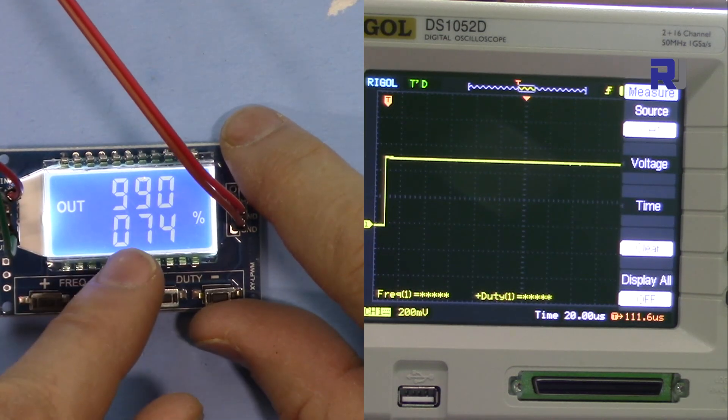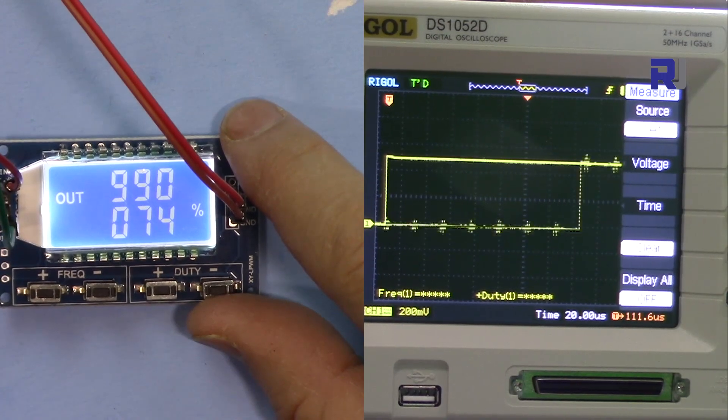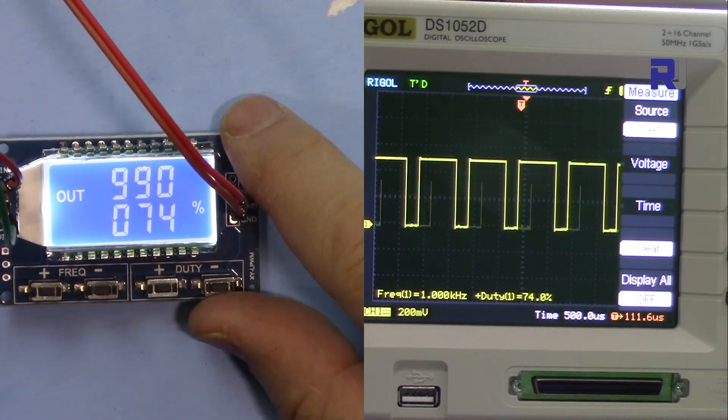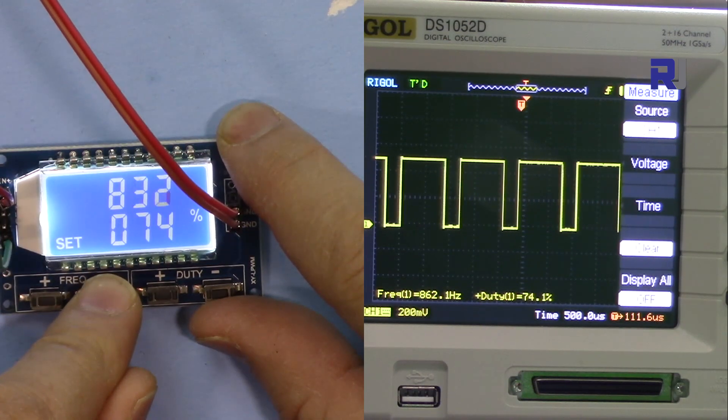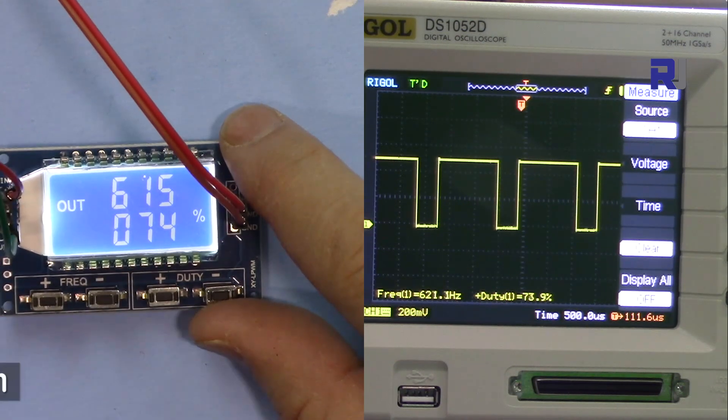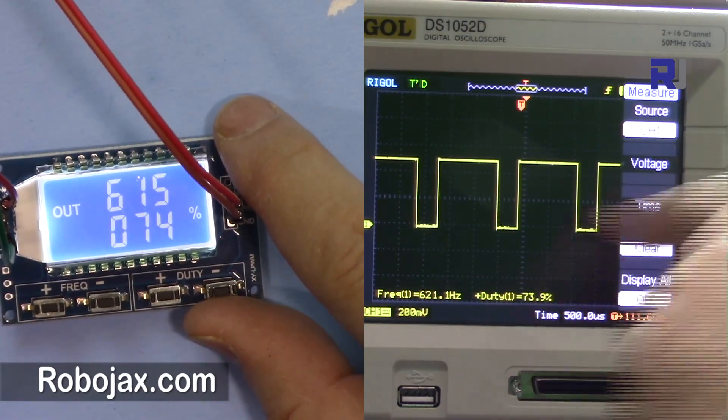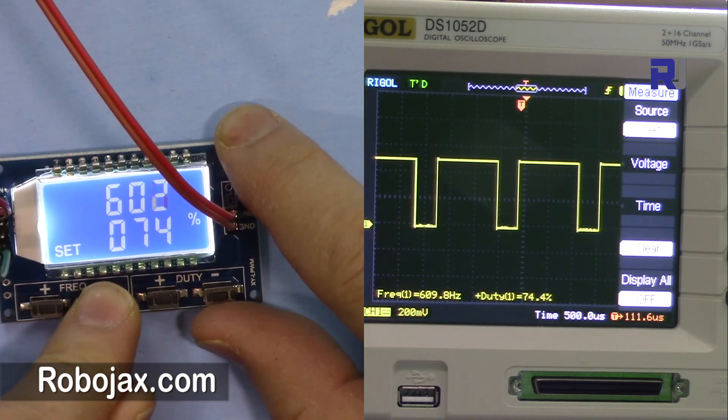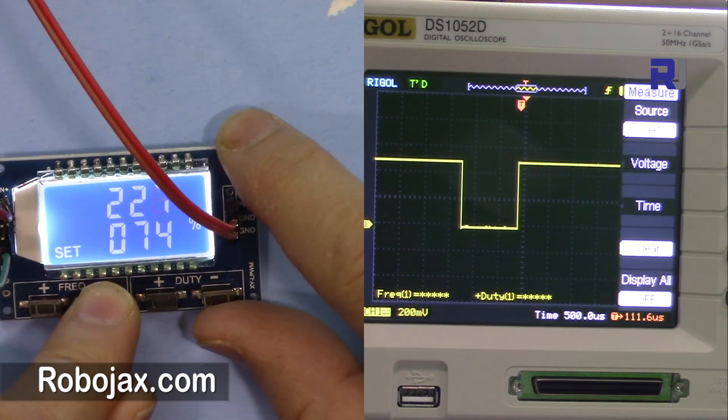When all dots disappear, this is 1 kilohertz. Let me go down. 600 Hertz - that's also good. Now the signal becomes better but still some spikes from time to time. Let me put it at 200 Hertz.